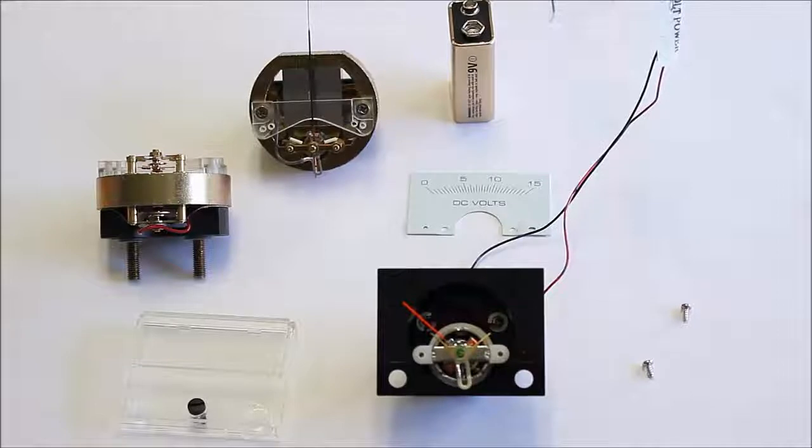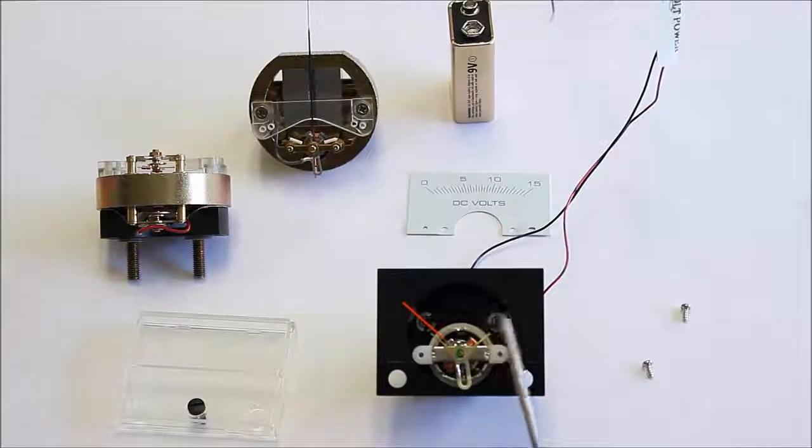So taut band is a little different design where there's a moving mechanism that's suspended between two pieces of metal. I'm not going to cover that today, but that's what we mean when we say taut band.